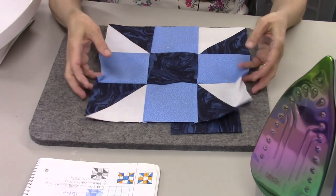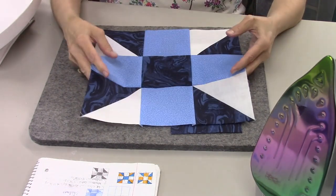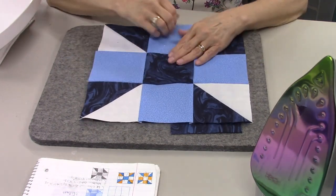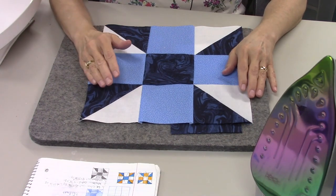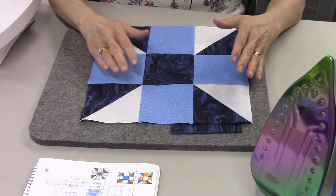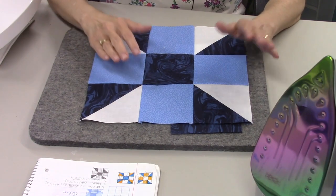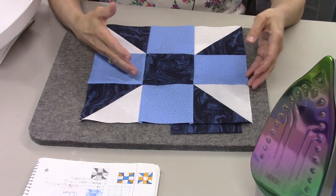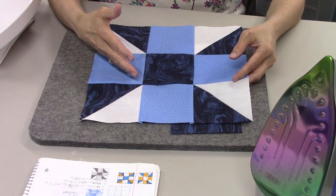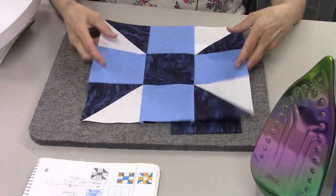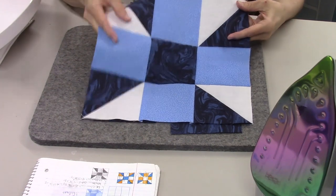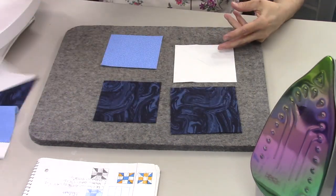So that was just a print error. If you ever come across a block that you think just doesn't make sense, do further research and see if you can find out if there was just a mistake in how it was printed. In my case, that's what it was. So this is Calico Puzzle and I'll show you the colors and fabrics you need to make this block.